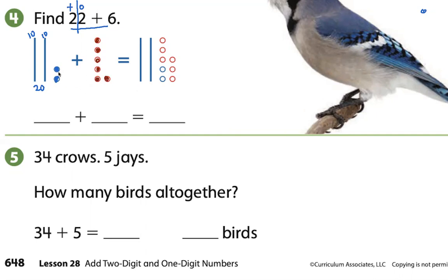And when you put them together, those two ones moving over here, one, two, that gives us a total of 8 ones. So we have 20 plus 8 equals 28.